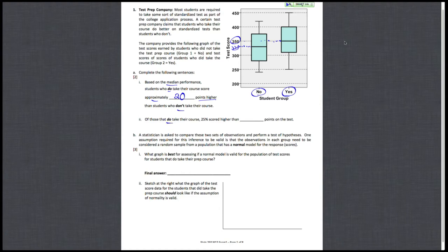We're asked to complete another sentence about those who do take the course, so focusing on the yes group. 25% scored higher than what number of points? 25%. So that must mean either Q1 or Q3, because both of those are going to have 25% on one side and 75% going the other direction.